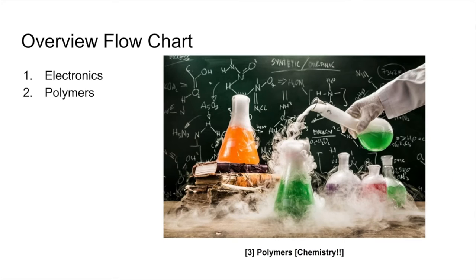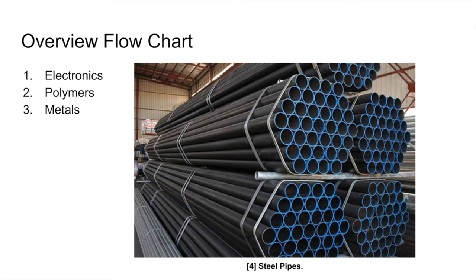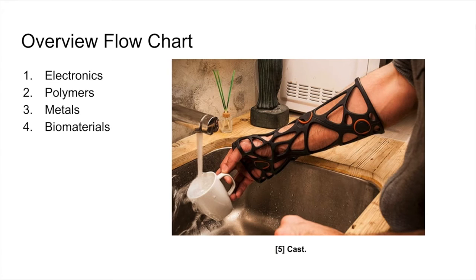You can be working with polymers, looking at chemistry for different applications such as food, agriculture, or making different compounds for electronics. You can be working with metals such as steel pipes, trying to improve corrosion resistance for oil and gas industry applications. You can also be working with biomaterials, where you're trying to find different materials and improving their properties to interact with certain living tissues, such as the cast shown here.